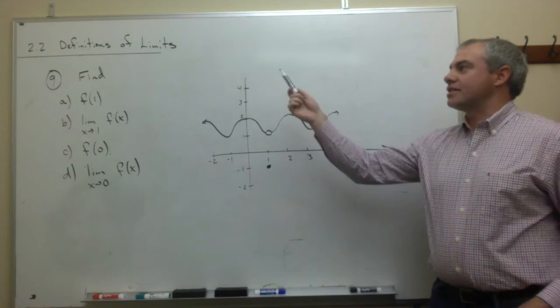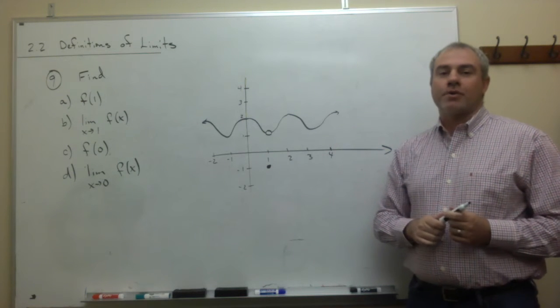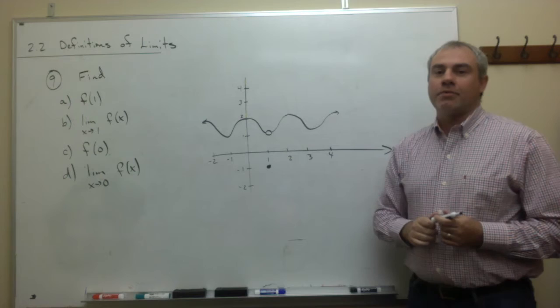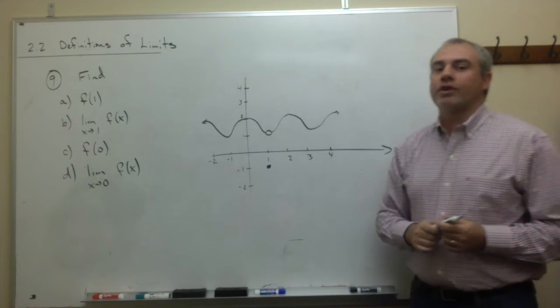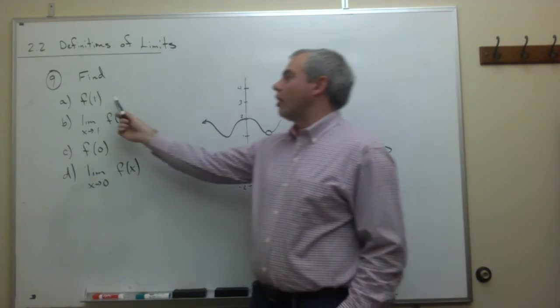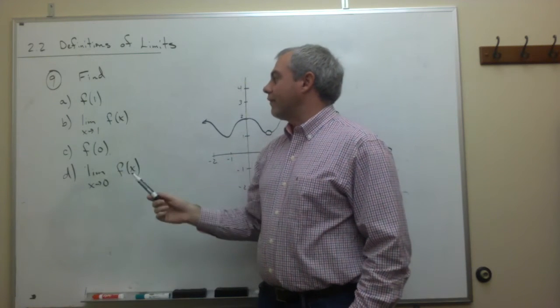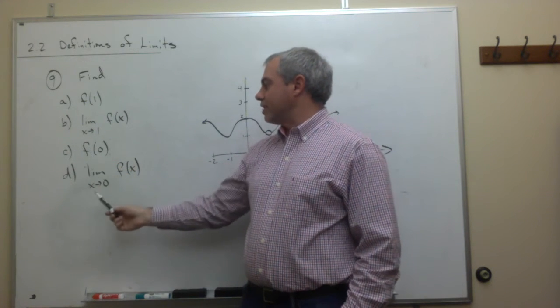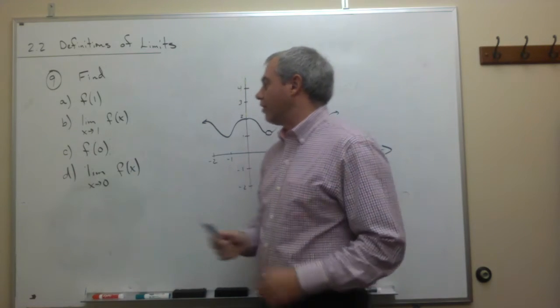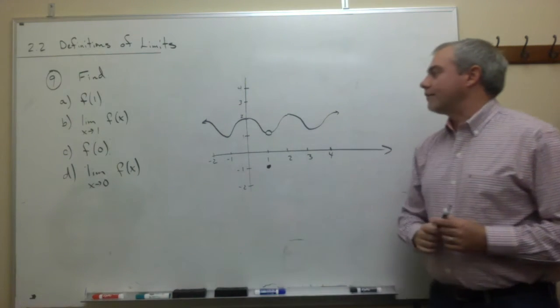In this video, let's take a look at section 2.2, number 9. In number 9, we're trying to find four different things: f of 1, the limit as x goes to 1 of f of x, f of 0, and the limit as x goes to 0 of f of x using the graph that we have right here.